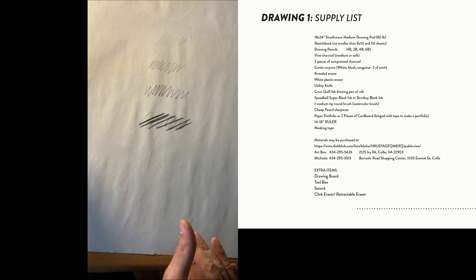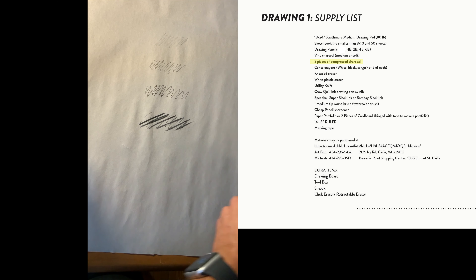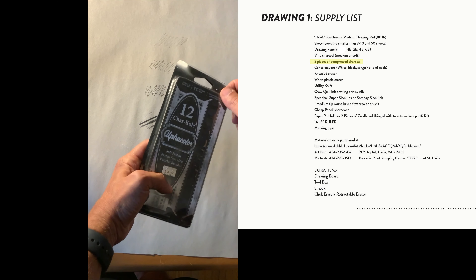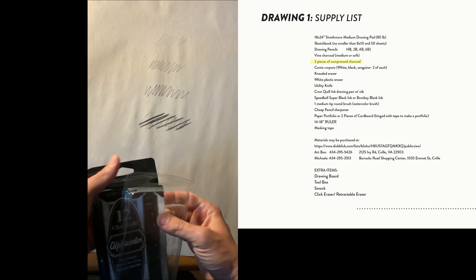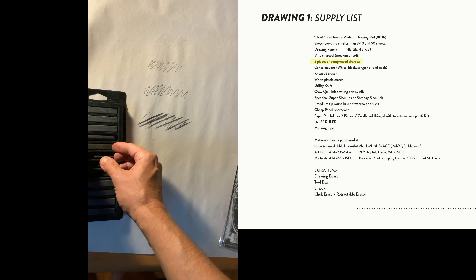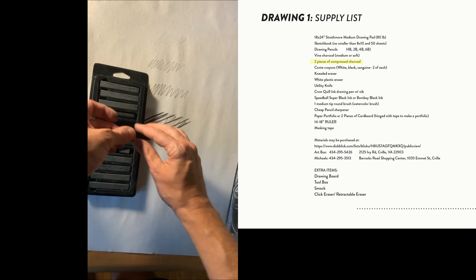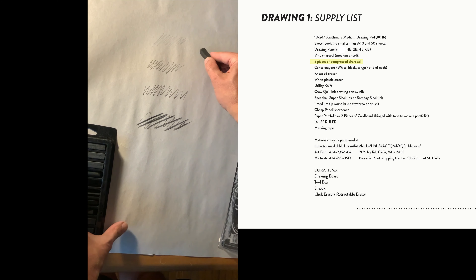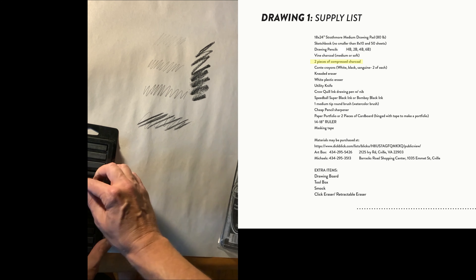Next is compressed charcoal. I only need you to get two to four pieces — two is fine. This is a much darker charcoal than vine charcoal. You can see it gives a much darker, wider line.